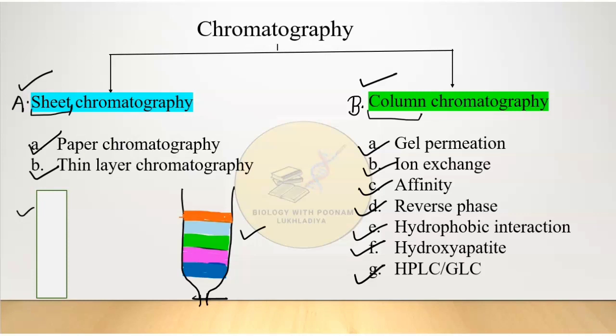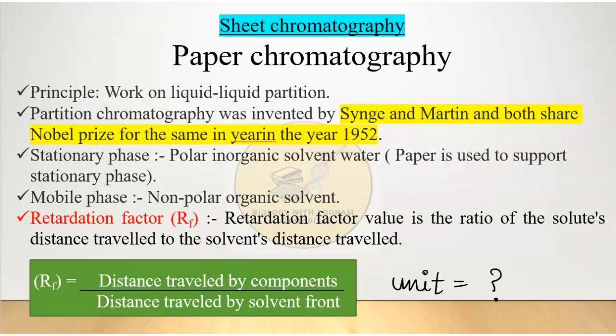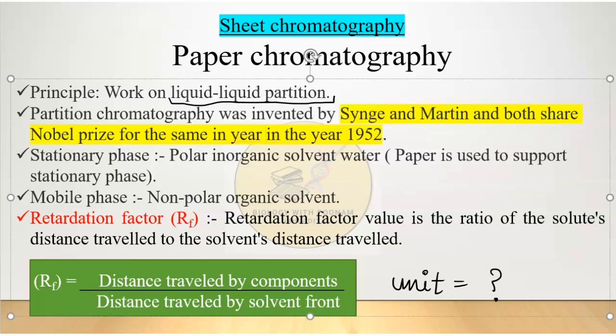Let's start with sheet chromatography, beginning with paper chromatography. The principle of paper chromatography is liquid-liquid partition, which is why it is also called partition chromatography. It was invented by Sanger and Martin, and both of them were awarded the Nobel Prize in 1952 for this invention.